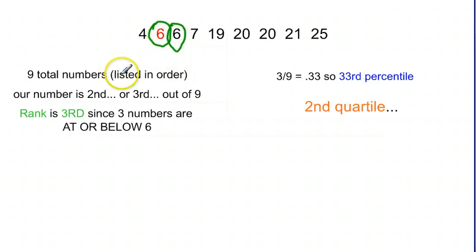Whenever you're dealing with percentile or ranking, you're always going to pick the one that's farthest out, because percentile is defined as how many numbers are at or below, or what percent of the numbers are at or below a given value. In this case, what numbers are at or below six? There are three numbers in our list of nine that are at or below six. So rank is going to be third.